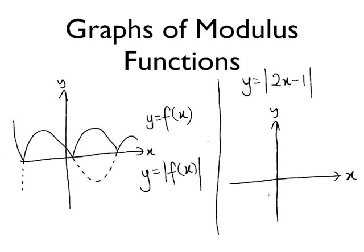So, y equals 2x minus 1 will look like this. It's going to be a straight line with a positive gradient and passing through minus 1. And this will be y equals 2x minus 1.